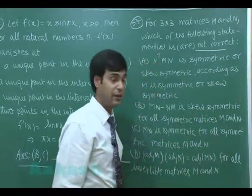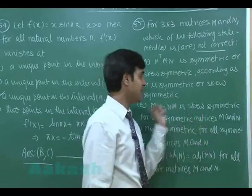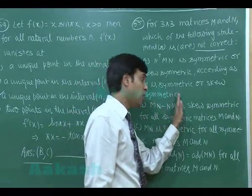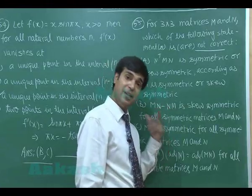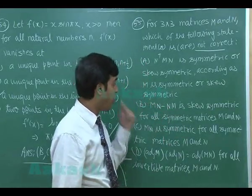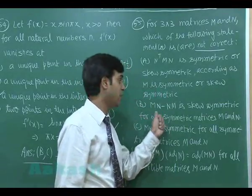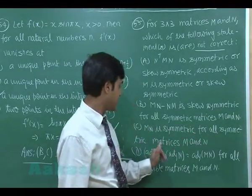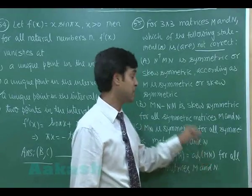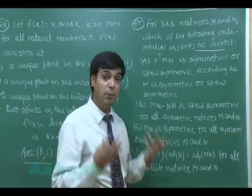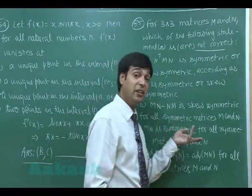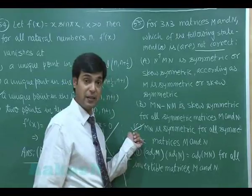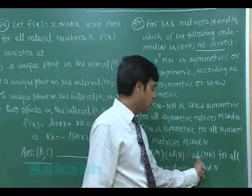Statement 2: MN − NM is skew-symmetric for all symmetric M and N. Taking the transpose of (MN − NM) gives −(MN − NM), confirming it is skew-symmetric. So statement 2 is also correct. Statement 3: MN is symmetric for all symmetric matrices M and N. We cannot conclude this because it's not given that M and N commute. So statement 3 is NOT correct — this is one of our answers.